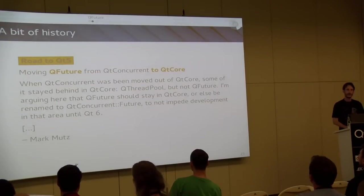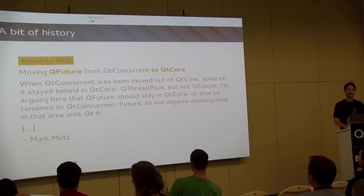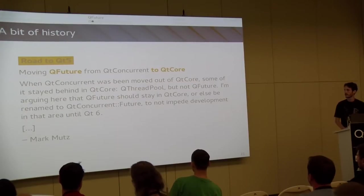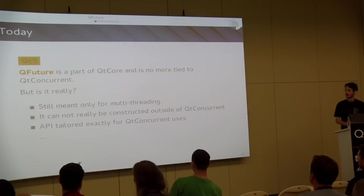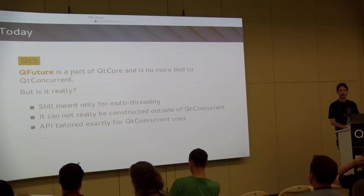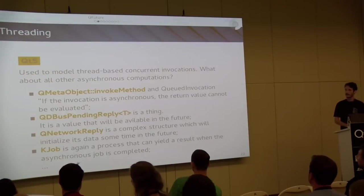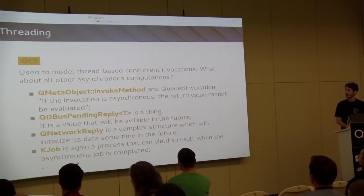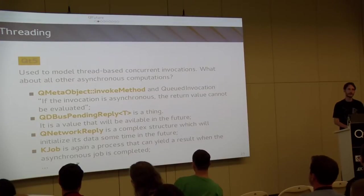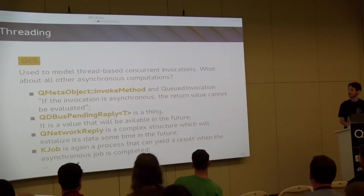Unfortunately in Qt 5, the idea was to make QFuture much more useful. Mark from KDAB argued QFuture should not be in Qt Concurrent but moved to Qt Core because it's a really useful concept that can be used outside Qt Concurrent. So on the road to Qt 5, QFuture became part of Qt Core - or at least that was the idea. The problem is that QFuture is still meant to handle only thread-based asynchronous operations, requiring a thread pool to work correctly.